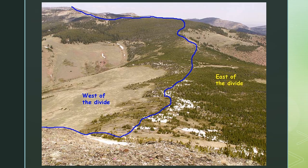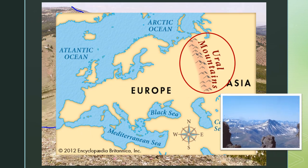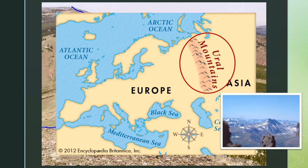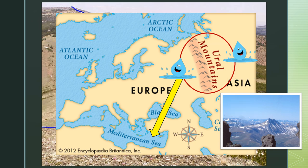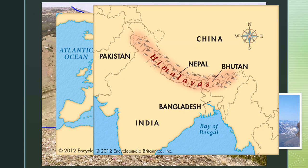Another continental divide exists between Europe and Asia, with the Ural Mountains forming the natural boundary. When rainwater falls west of the Ural Mountains, the water flows to the Mediterranean Sea and the Atlantic Ocean. But if the water flows east of the Ural Mountains, the Himalaya Mountains also form a continental divide in southern Asia, separating river systems between the Mediterranean Sea and the Indian Ocean.